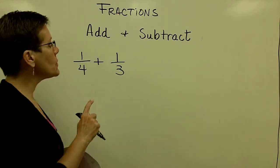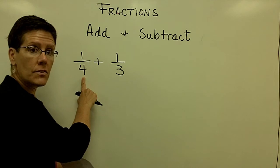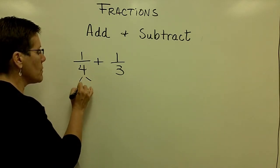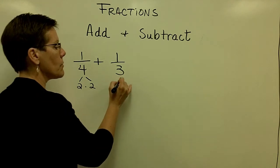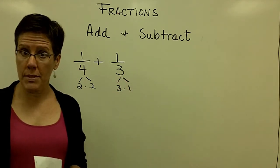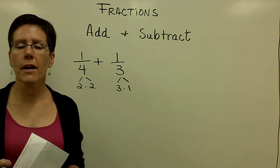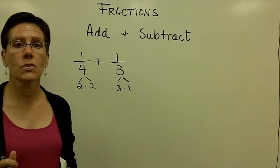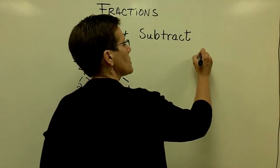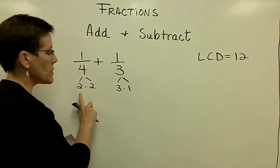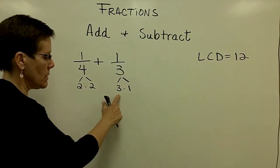That common denominator includes the factors of these denominators. In this case, the factors of 4 are 2 times 2, and the factors of 3 are just 3 times 1. And because there is no repetition in terms of these common prime factors, I need to use them all. The common denominator for this is 12. I'm going to write that off to the side here, the least common denominator is 12 because it is represented by 2 times 2 times 3.